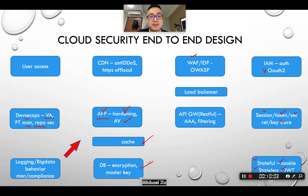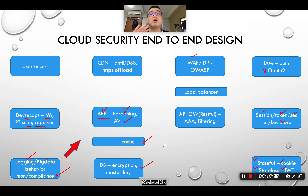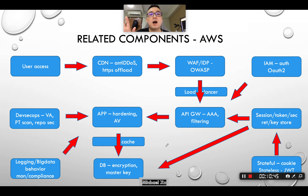Last but not least, there's centralized logging — big data analytics, behavior-based monitoring. It baselines the environment and alerts you if anything suspicious occurs. You also need to ensure compliance — for example PCI DSS if you're running an e-commerce website — and ensure your configuration follows compliance requirements over time. This is the overview from an architectural perspective. Next, we'll give a real-life example based on AWS, selecting AWS components to secure each layer.